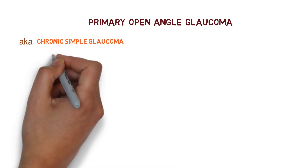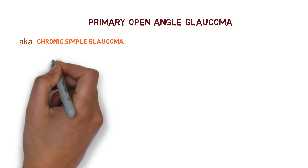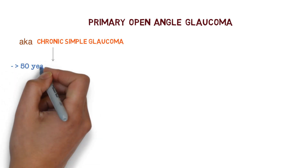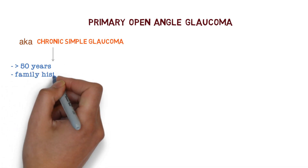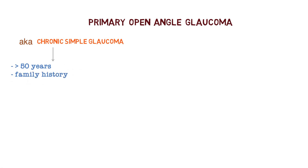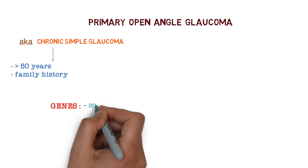This condition is more common in patients more than 50 years of age. A strong family history is a risk factor because it is carried by genes like Optineurin, WDR36, and MYOC. These genes are responsible for this condition.